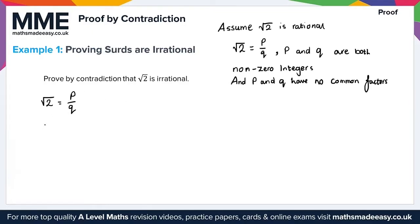To get rid of the square root, we square both the left-hand side and the right-hand side. Squaring root 2 gives us 2, and squaring P over Q gives us P squared over Q squared. Then multiplying both sides by Q squared, we get P squared equals 2Q squared.